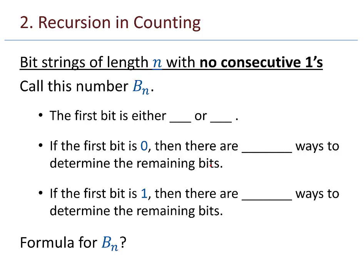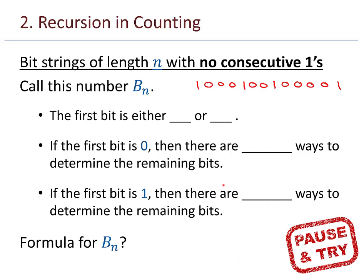Bit strings of length n with no consecutive ones — this isn't a standard counting formula, but it's an interesting question. We'll call this b_n. Something like 1, 0, 0, 1, 0, 0, 0, 1 is an example of a bit string with no consecutive ones. I'll pause the video here — you try to find a recursive formula for b_n, then start the video again when you are ready to check your work.